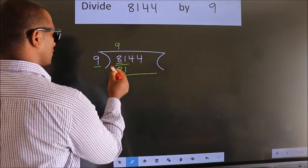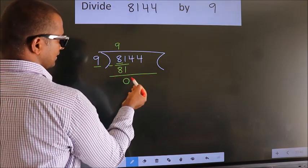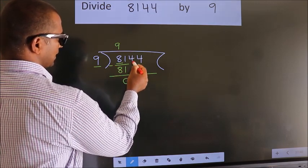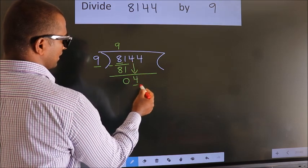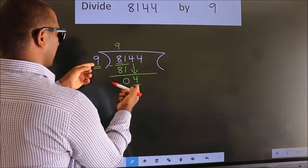Now, we should subtract. We get 0. After this, bring down the beside number. So, 4 down. Here we have 4, here 9. 4 is smaller than 9.